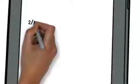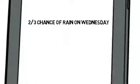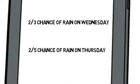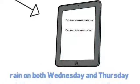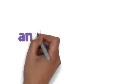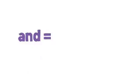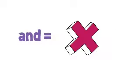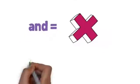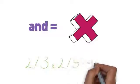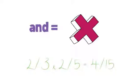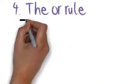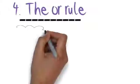The AND rule — if you are given the following information: a 2 out of 3 chance of rain on Wednesday and a 2 out of 5 chance of rain on Thursday, what are the chances that it will rain on both Wednesday and Thursday? AND always means multiply, so we multiply the two fractions together: 2 out of 3 times 2 out of 5 equals 4 out of 15, which is your probability.